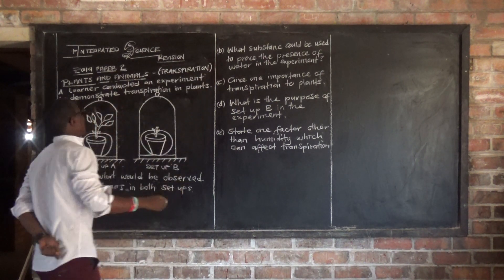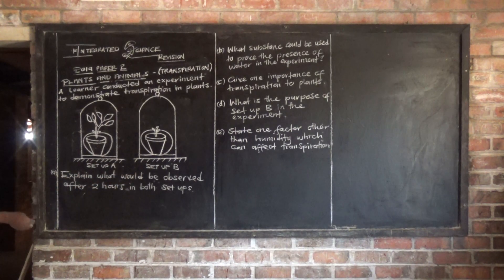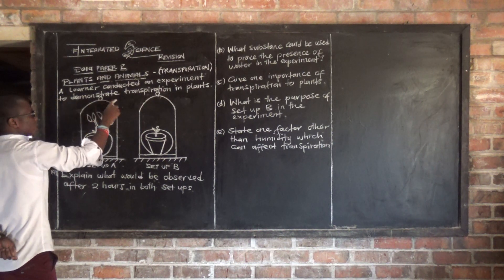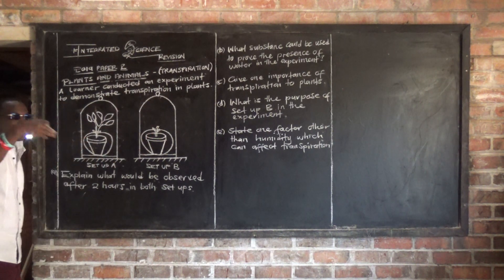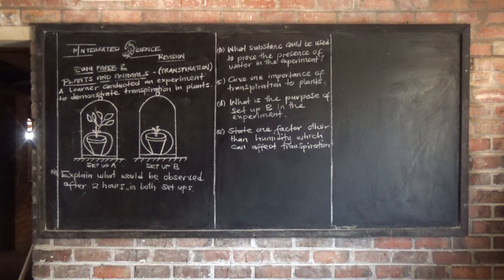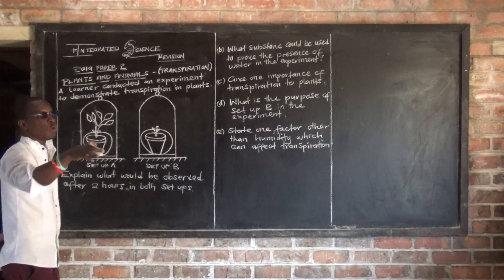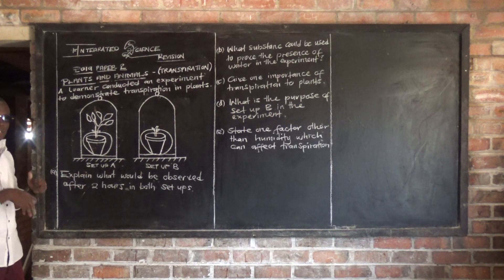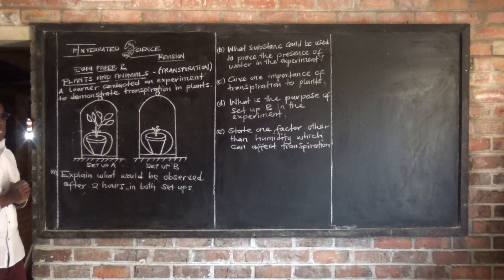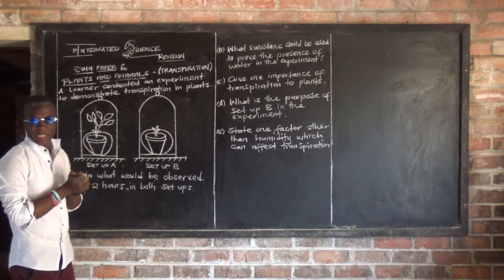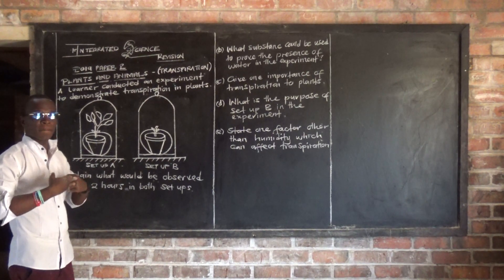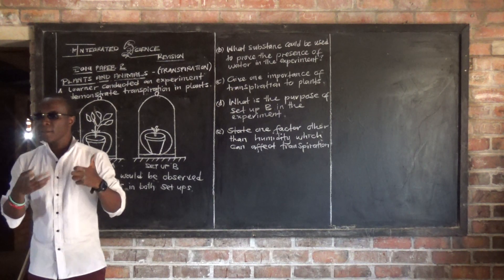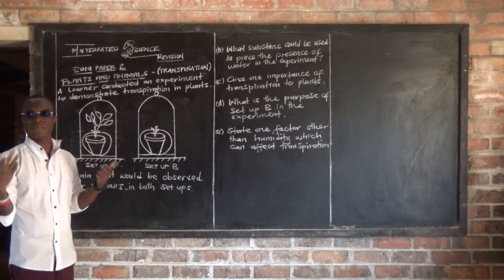This question is on transpiration under plants and animals. It says Elena conducted an experiment to demonstrate transpiration in plants. You guys are supposed to know what transpiration is. Transpiration is the loss of water vapor by a plant through the stomata. That is transpiration.